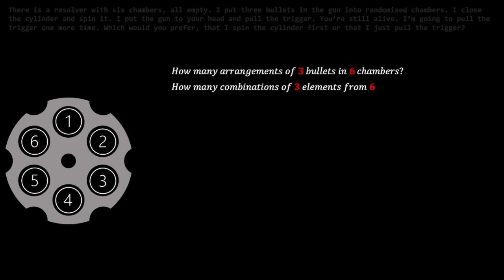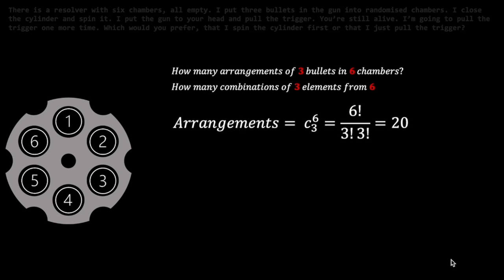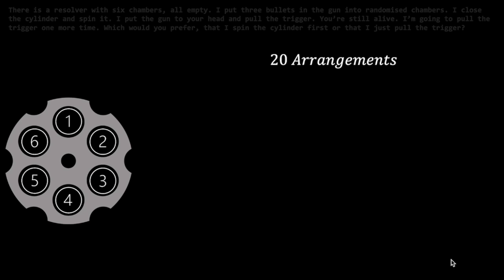Now back to the question. We are now considering arrangements of three bullets in six chambers, or combinations of three elements from six. This would be 6 choose 3, which equals 20 combinations of chambers.